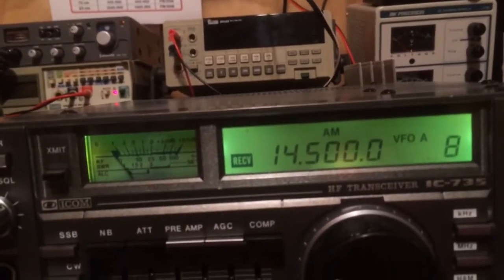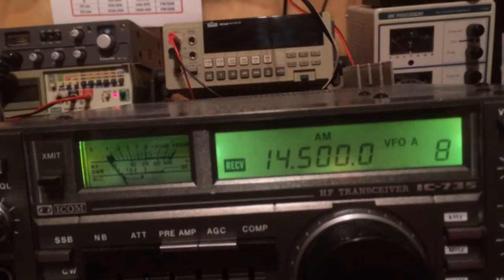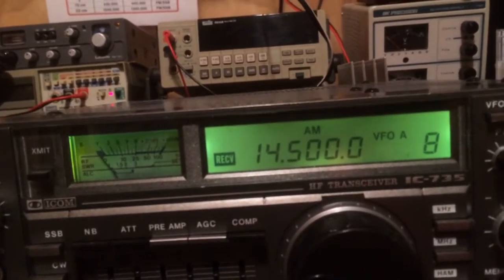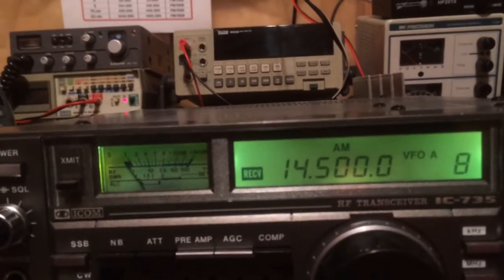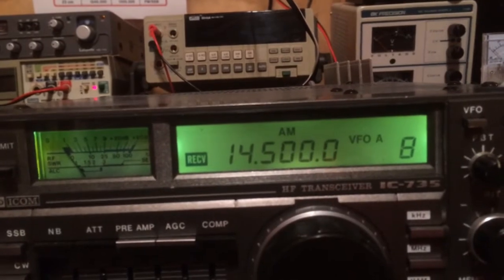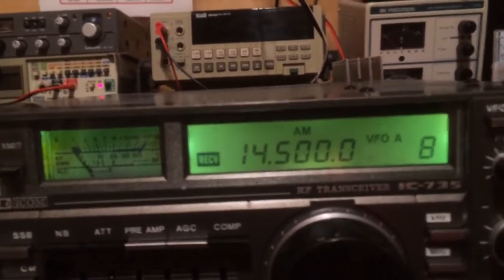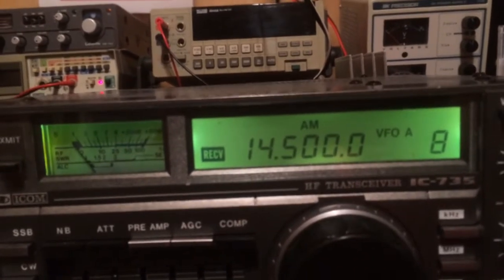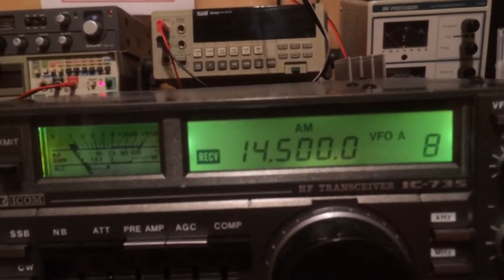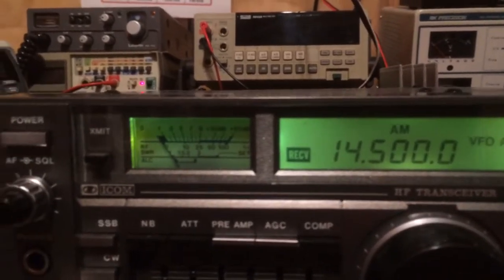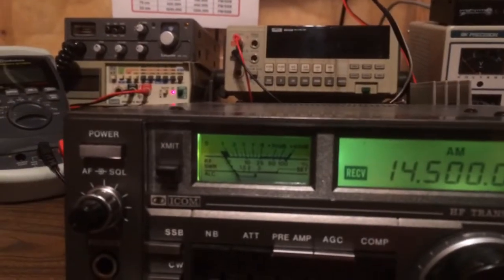And then I'm going to go to the 30 meter band, we'll call that 10.5 megahertz as a reference point. Now what I measured with the analyzer for the 20 meter band was a SWR of greater than 5, and what I measured on the 30 meter band was an SWR of greater than 10. And again that's the maximum range of my meter.